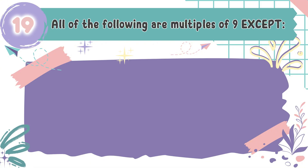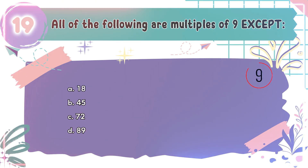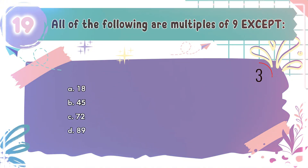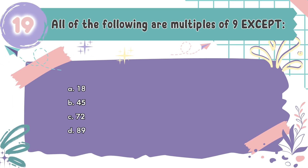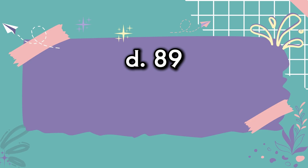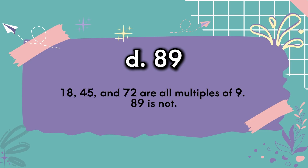Question number 19: All of the following are multiples of 9 except — the choices are A: 18, B: 45, C: 72, D: 89. The correct answer is D, 89. 18, 45, and 72 are all multiples of 9. 89 is not.